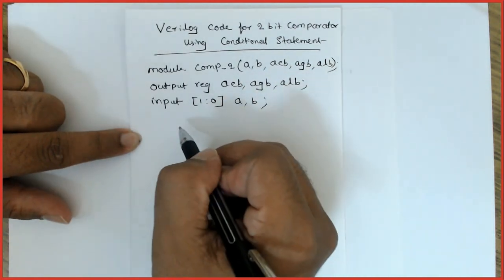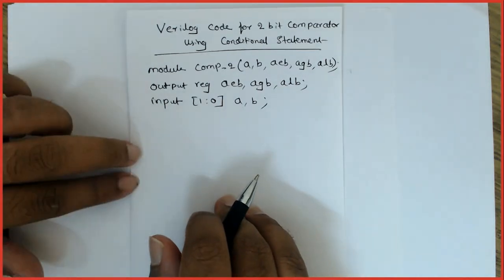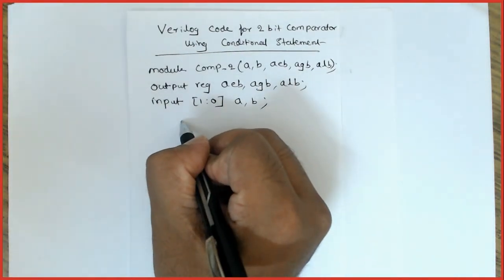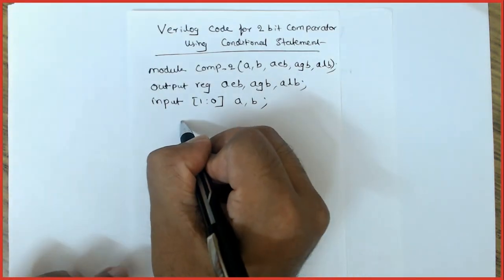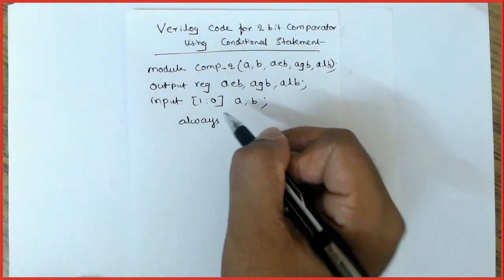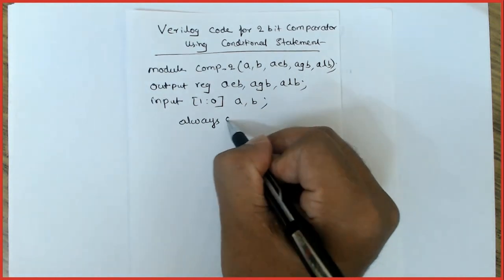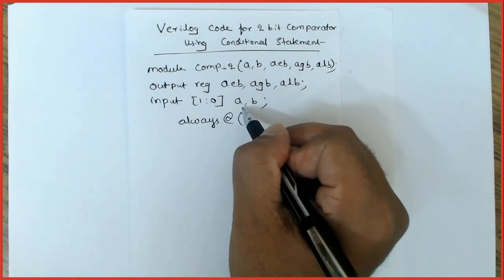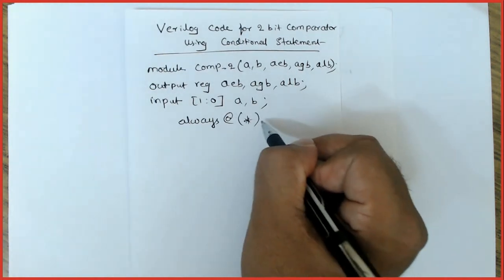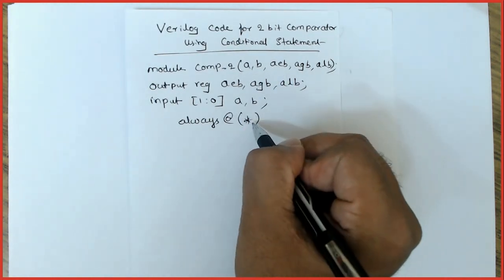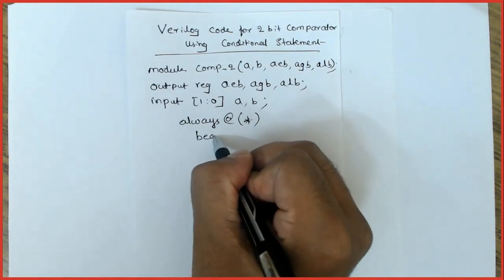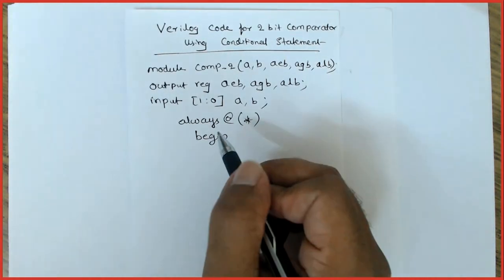Now I need to use always block. Always at—you can either write a comma b, or a or b, or else you can directly write it as star. Any event occurring on any input, this always statement will be triggered. Begin.